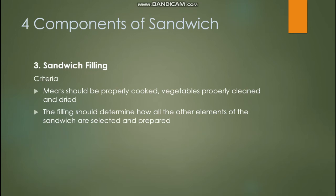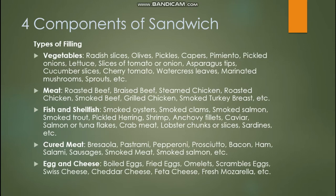Next we have sandwich fillings. Meat should be properly cooked, and vegetables should be properly cleaned and dried. For example, in a BLT sandwich — bacon, lettuce, tomato — the lettuce leaves must be dried to prevent water from dripping onto the bread, which could make it soggy. The filling should determine how all other elements of the sandwich are selected and prepared.